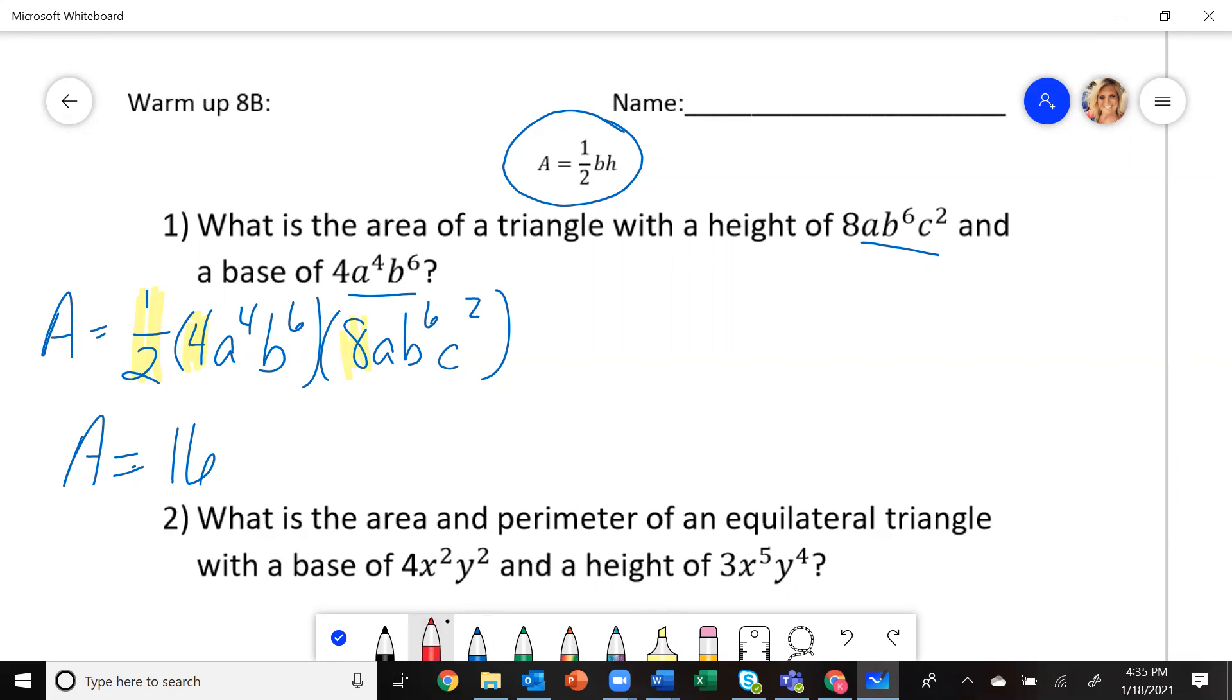Now, for your exponents, you've got to add your exponents up. So I have A to the 4th, and then this just has an A, so there's a 1 here. So I'm going to have A to the 5th power. Then if you look at your Bs, I have B to the 6th, B to the 6th. 6 plus 6 is 12, so it's B to the 12th.